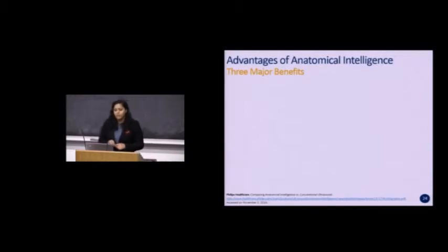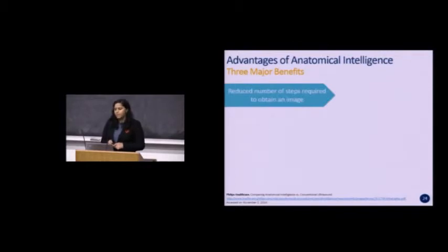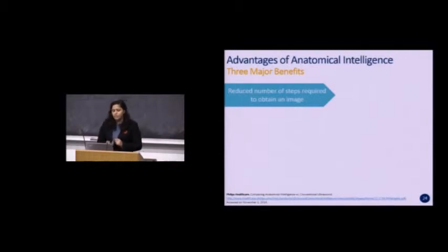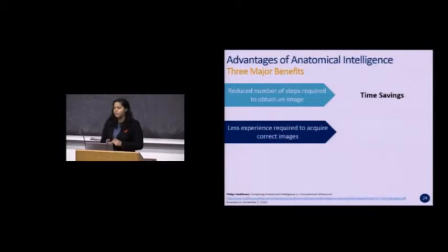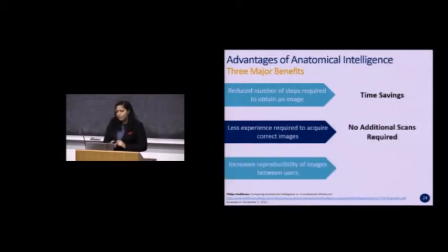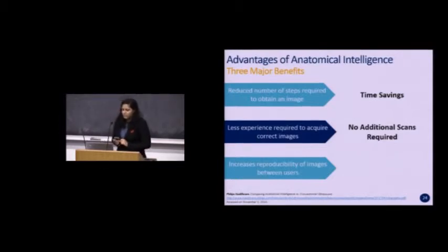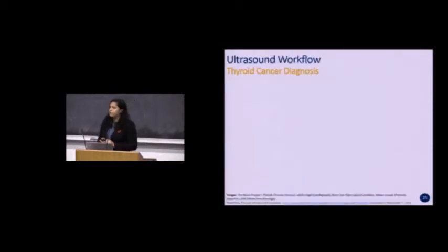There are three major benefits of using an anatomically intelligent system. The first is that it reduces the number of steps required to acquire an image, which can lead to time savings. A second advantage is that it can be used effectively by an inexperienced user almost as well as an experienced user, preventing the need for additional scans and inaccuracies in downstream diagnoses. The third benefit is that it increases the likelihood that two different users will produce similar images, thereby increasing diagnostic certainty.